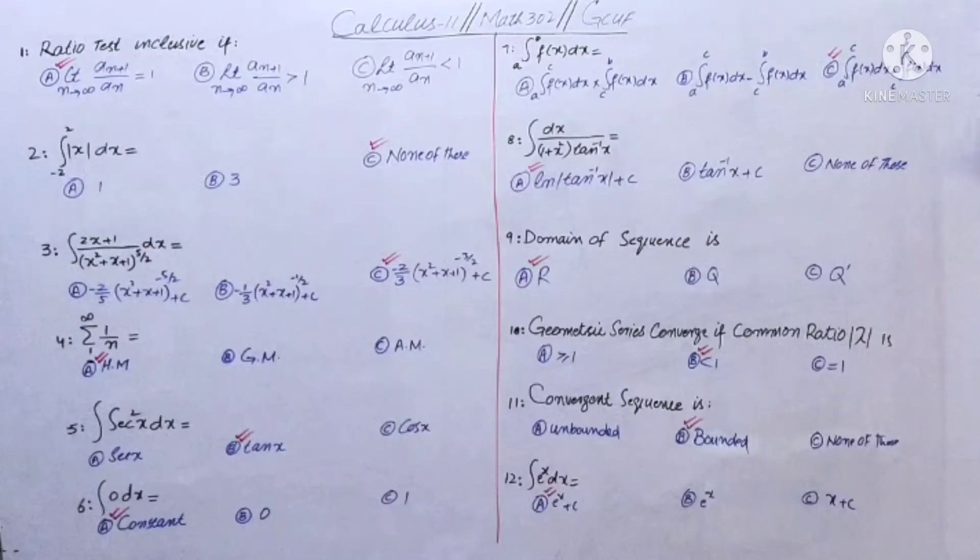Number seven: integral a to b f(x) dx. This definite integral property, we can introduce the third variable c as the upper limit that will be lower limit in the middle. This is the formula. The right answer will be integral a to c f(x) dx plus c to b f(x) dx.